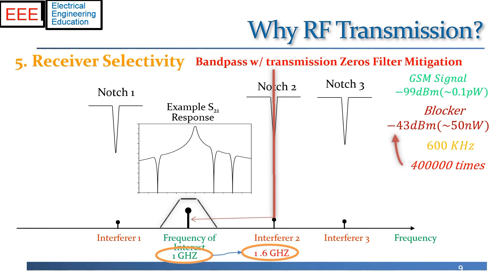To put that in perspective: imagine looking at the bright sun in summer, with the moon right next to it. The full moon is about 400,000 times less bright than the sun, and yet your eyes can actually see the moon. That's essentially what the GSM receiver can do. In fact, the GSM receiver can detect a signal 10 billion times weaker than an interferer — though in that case the interferer has to be 20 megahertz away. Our receivers are so good that they can detect signals of interest in the presence of incredibly strong interferers that no other systems can match.